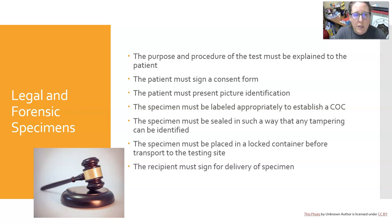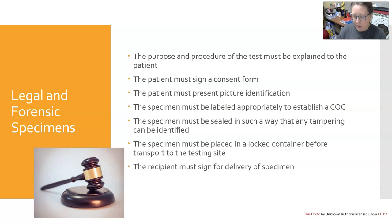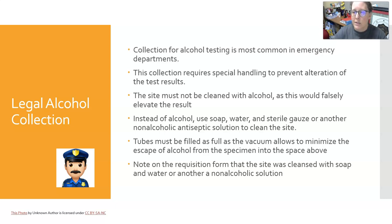The purpose and procedure of the test must be explained to the patient, who must sign a consent form and present picture identification. Specimens must be labeled appropriately in front of the patient, who often initials the seal to confirm agreement. The seal demonstrates any tampering — the first person to unseal the specimen should be the one testing it. A broken seal indicates possible tampering. The specimen should be placed in a locked container before transport, and the recipient must sign for delivery.